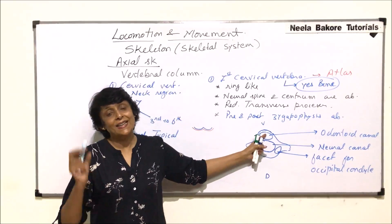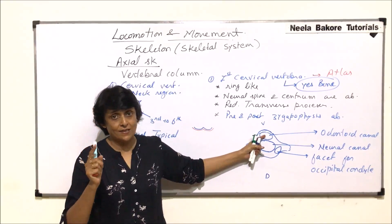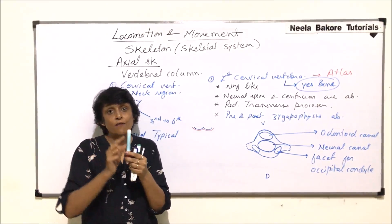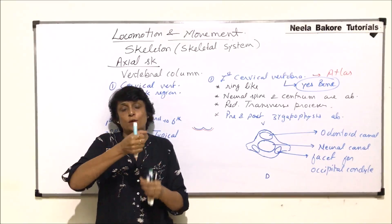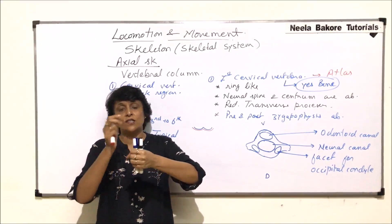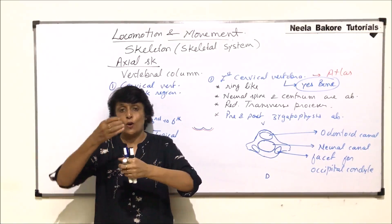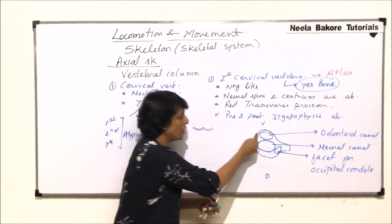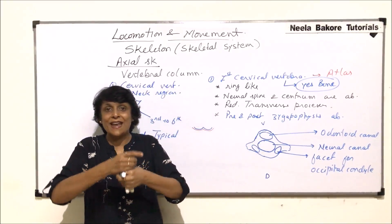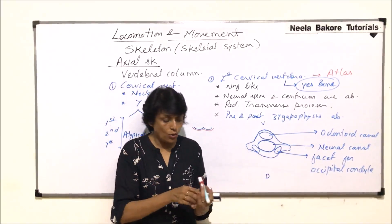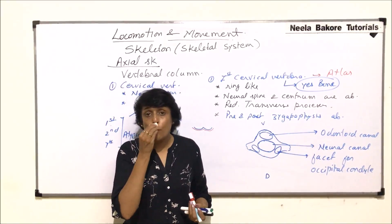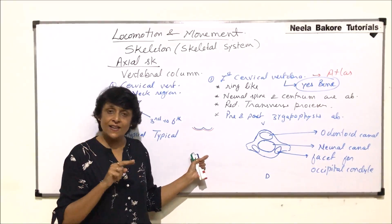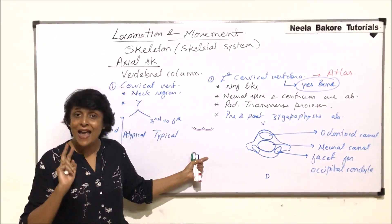The odontoid process is a peg-like structure belonging to the axis, the second cervical vertebra, that projects upward. Since this structure comes out from the axis, atlas must have a socket — the odontoid canal — for it to fit into. So the odontoid canal in atlas is specifically meant for receiving the odontoid process, which is an extension of axis.